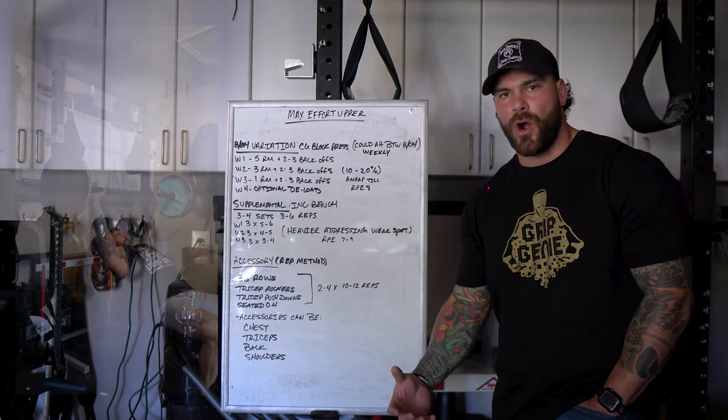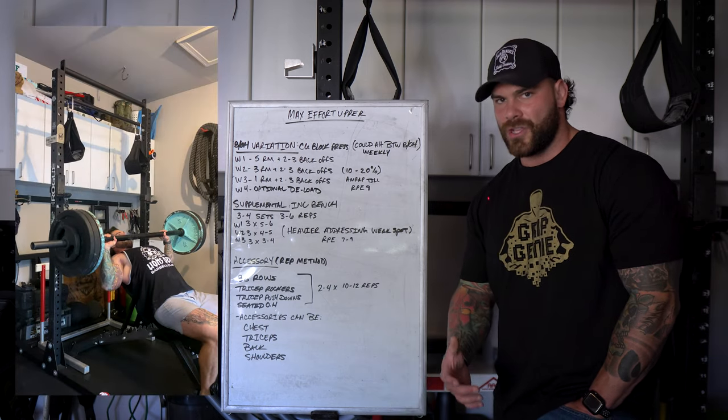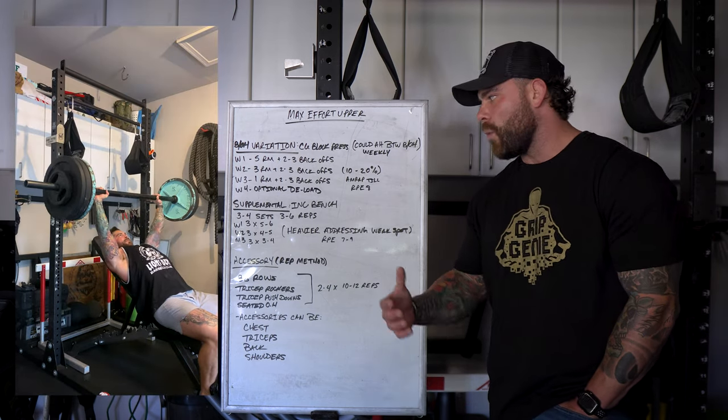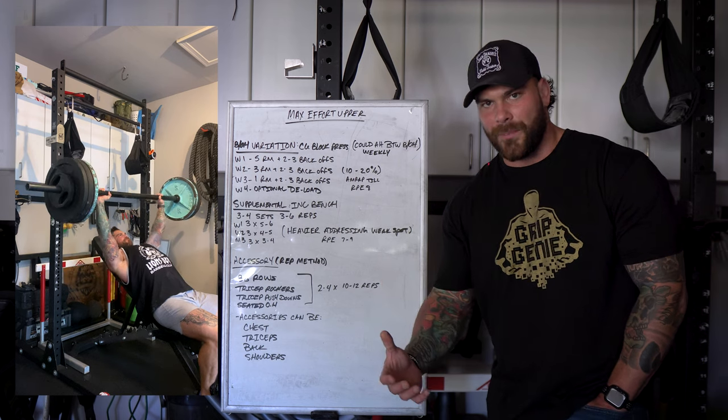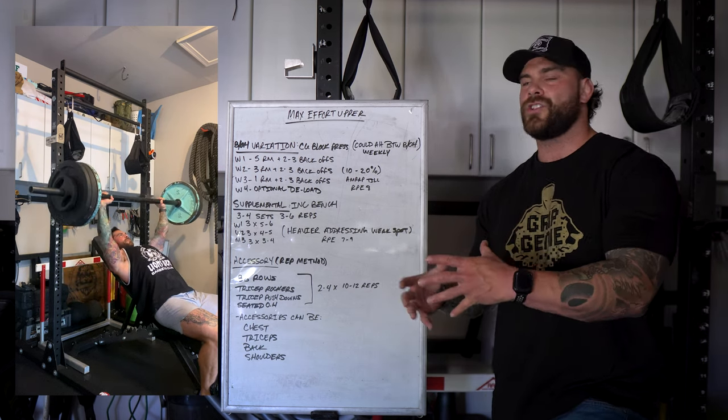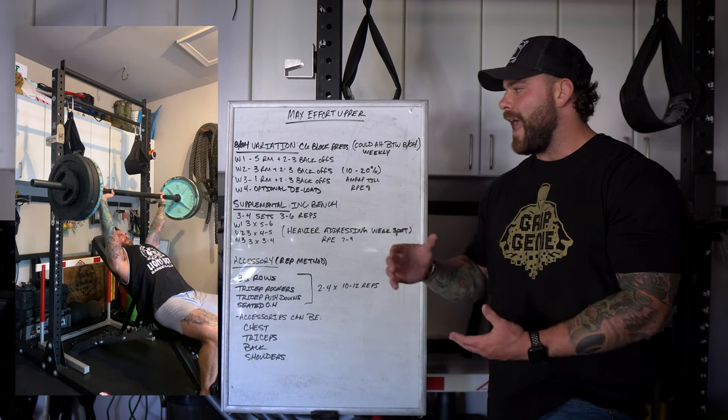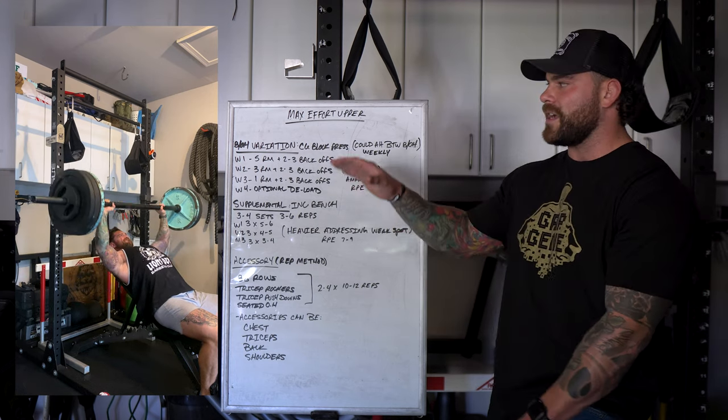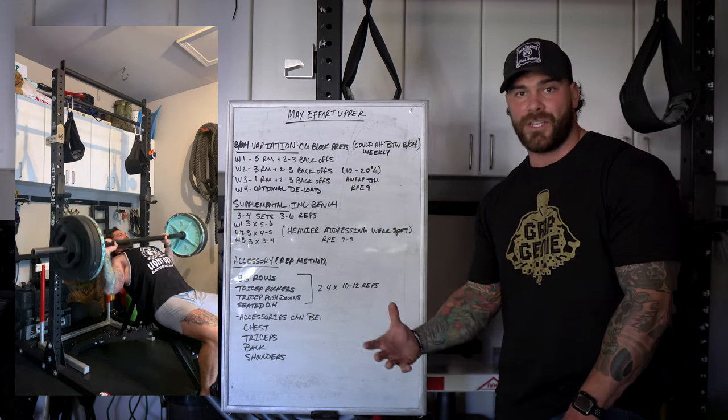Supplemental lifts. So the supplemental part of this is we want to pick a variation that we're still going heavy in, and we're going to work between that three to six rep range. So we're still in that strength rep range. We're able to push pretty hard and we're working on a weak area that's going to help increase our competition lift.